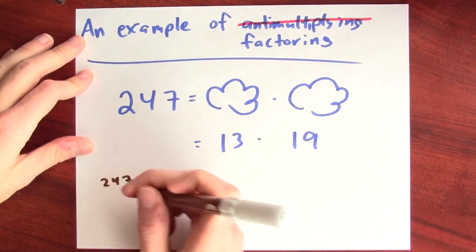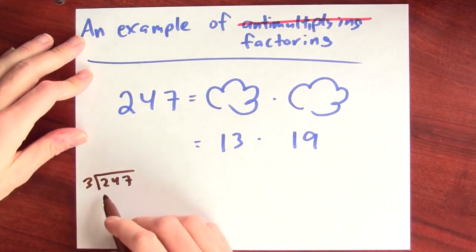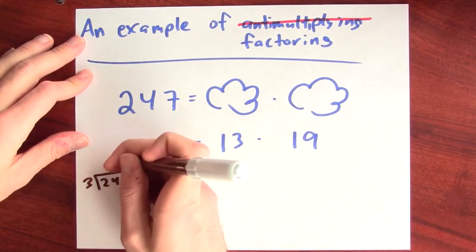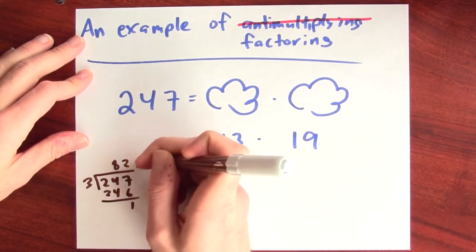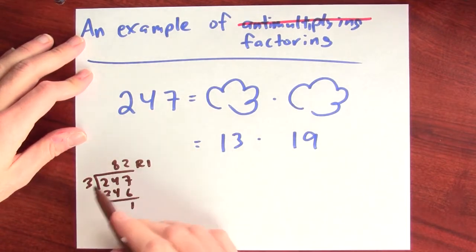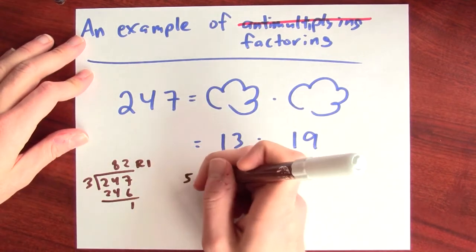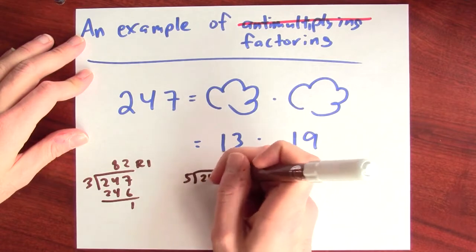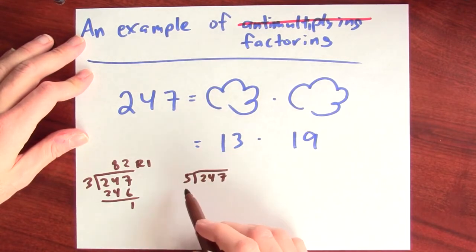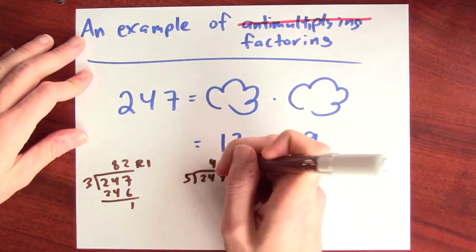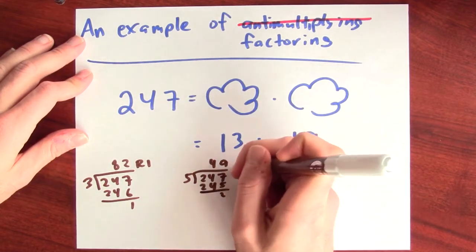So to figure this out, maybe I'd first see is 247 divisible by 3. Well, 3 goes into 247 82 times, but there's a remainder of 1. So 82 times 3 isn't 247. I got that pesky remainder. And maybe I'll try 5. Does 5 go into 247? Well clearly not, because the last digit's not a 0 or a 5. How many times does 5 go into this thing? I guess 49 times, and I get 245. And that gives me a remainder of 2.